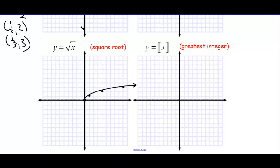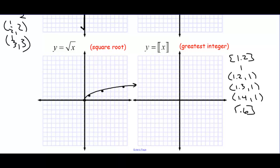The greatest integer function is the biggest integer not bigger than what you plug in. So the greatest integer of 1.2 is 1. The greatest integer of 0.6 is 0. The greatest integer of 0 is 0, and it'll be 0 all the way until we get to 1 — that's an open dot. Then we get to 1 with a closed dot, over to an open dot, closed to open, and so on. It's a piecewise step function.